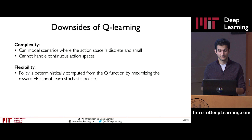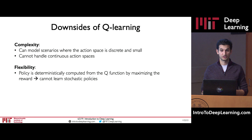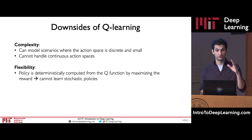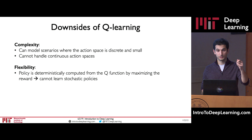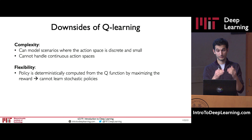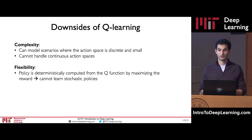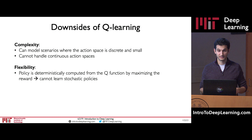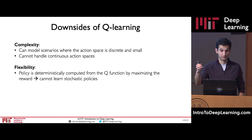There have been updates to Q-learning that can handle continuous action spaces, but in the foundational version, we can typically only handle discrete or fixed amounts of actions. The other downside is flexibility: our policies are determined deterministically by our Q function — we just pick the action with the maximum Q value, which is a deterministic operation. It cannot learn stochastic processes where the environment is stochastic and may change different outcomes in the future.